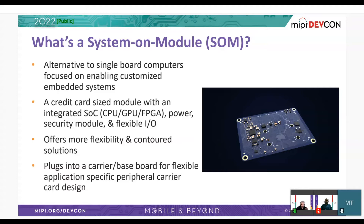The SOM we're talking about today is the KRIA K26. It's about a credit card sized module that brings together a SoC containing a CPU, a GPU, and an FPGA, along with all the digital support circuitry and peripherals — including power supplies, DDR4 chips, a TPM or trusted platform module, non-volatile memory — and exposes a set of flexible IO to the user, one of which we'll focus on today: the MIPI IO enablement.